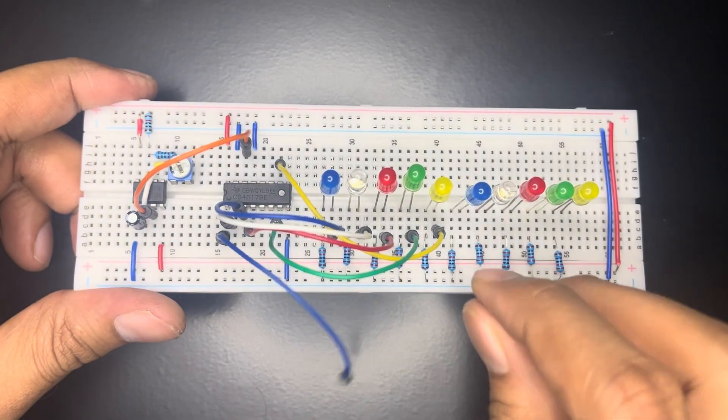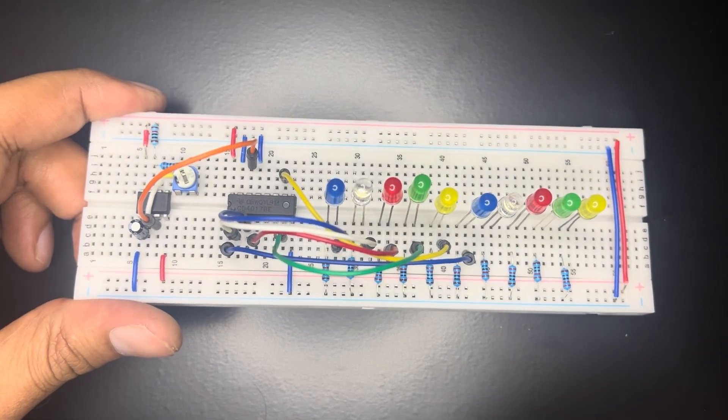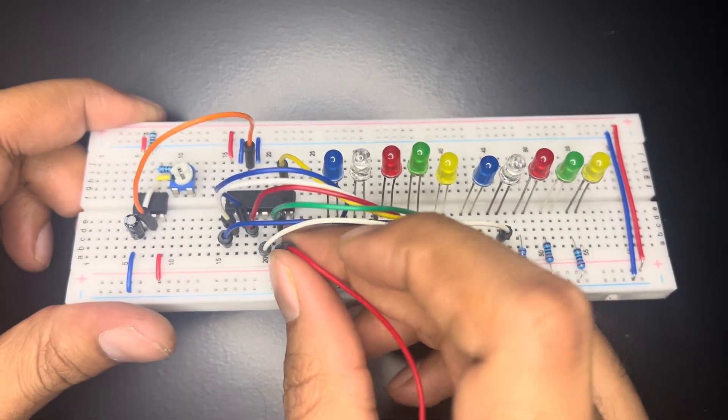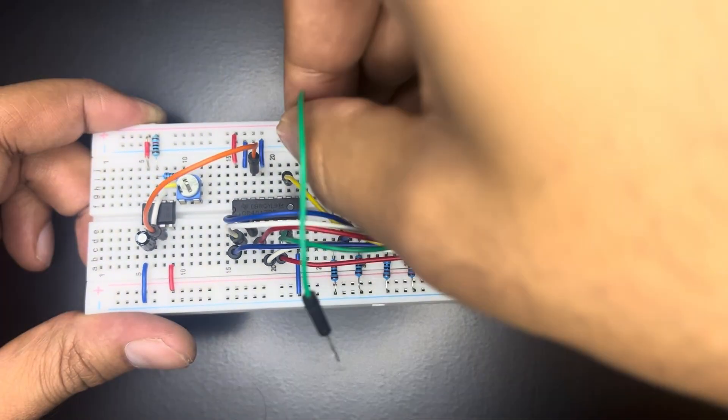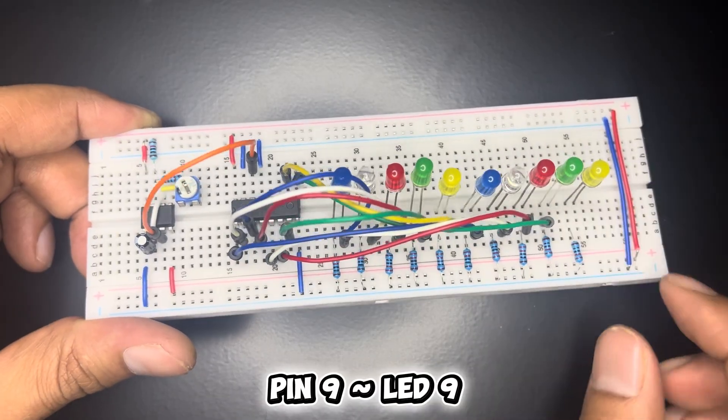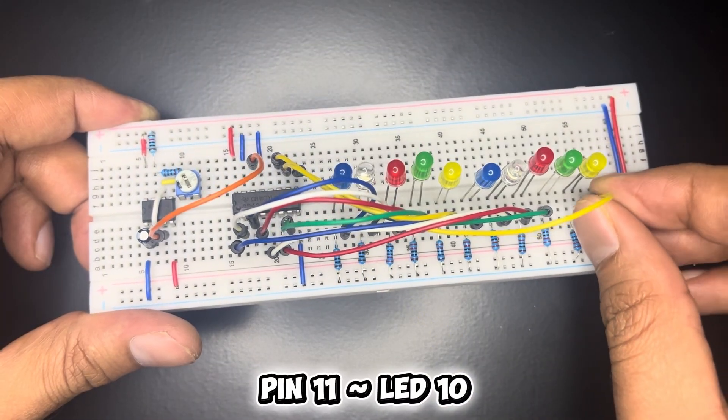Q5 is pin 1 connected to sixth LED. Q6 is pin 5 connected to seventh LED. Q7 is pin 6 connected to eighth LED. Q8 is pin 9 connected to ninth LED. Q9 is pin 11 connected to tenth LED.